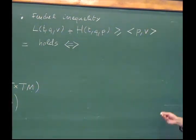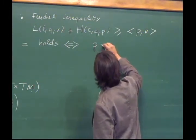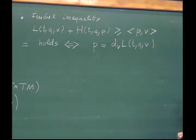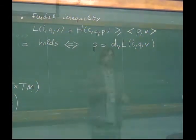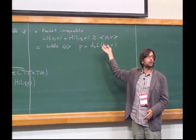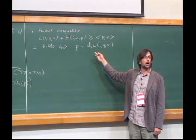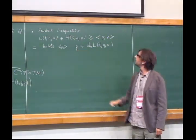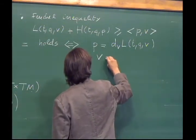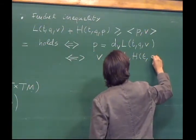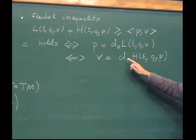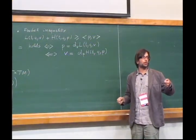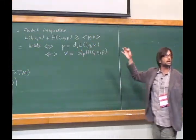Equality holds if and only if v and p are related by the Legendre transform — for instance, p equals d_v L(t,q,v). Since L is defined on a vector bundle, we can differentiate it fiber-wise, which gives a co-vector exactly like p. This is equivalent to saying that v equals d_p H(t,q,p), where since the dual of the dual is canonically identified with the original space, this is a vector.